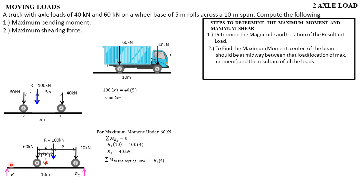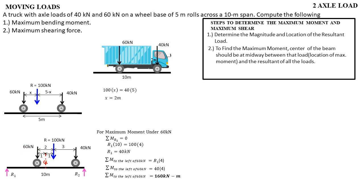So the moment equals 40 times 4, which is 160 kN·m. That is the maximum moment under the 60 kN load — when the truck is positioned so that the center line of the beam is midway between the 60 kN and the resultant, which is the 100 kN. We are done with the 60 kN case. We also need to try the 40 kN case, and whichever produces the larger value will be the maximum moment.